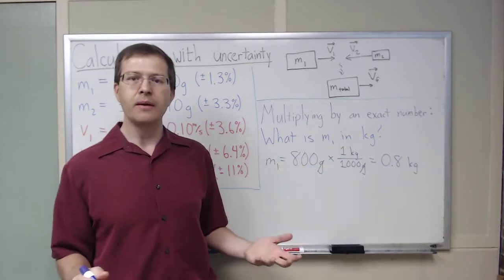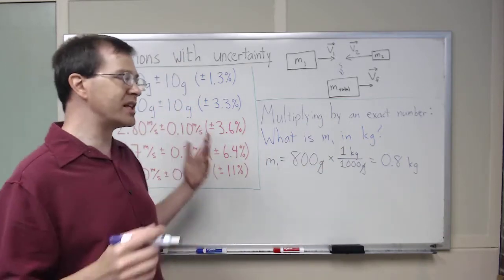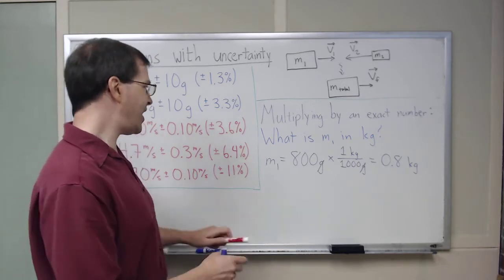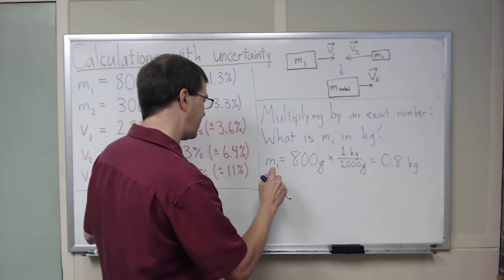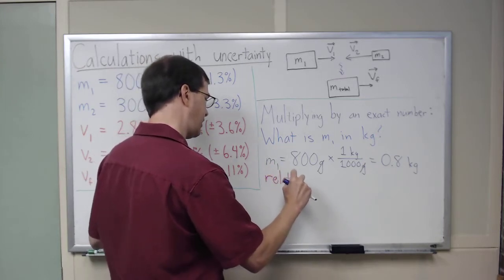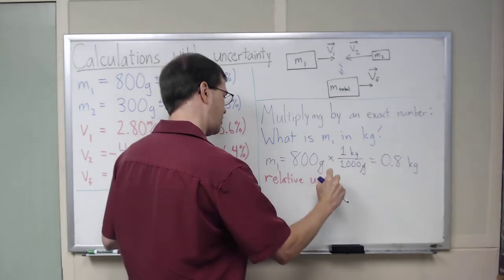So if that's an exact number, the uncertainty is actually really simple. The rule is, in this case, that the relative uncertainty is the same.